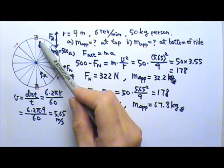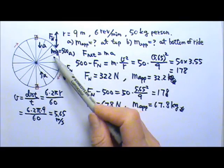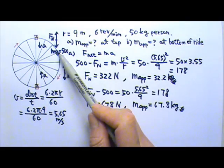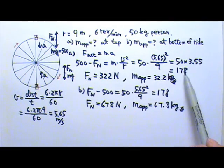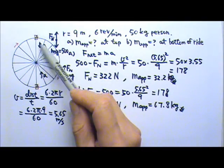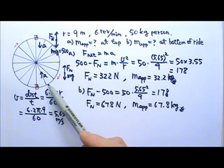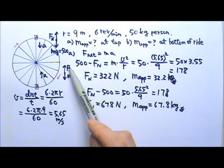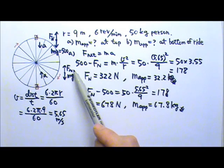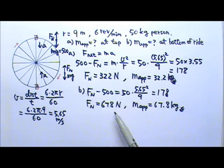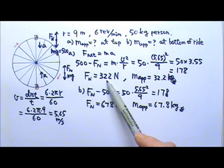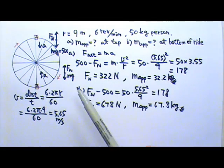So when the person is up there, the downward mg 500 has to be 178 more than the normal force, so it has 178 net force to provide this acceleration. When he is down here, the upward force, normal force has to be 178 more than the weight 500. So the normal force is 500 plus 178 and that one is 500 minus 178.